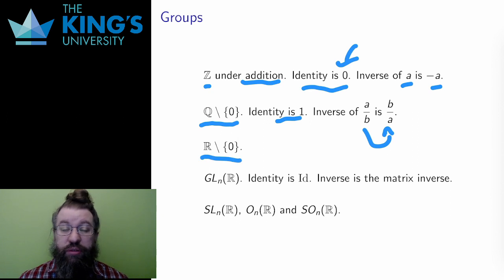Similarly, the real numbers without 0 are a group with ordinary multiplication. The identity is again 1, and the inverse is again the ordinary reciprocal.